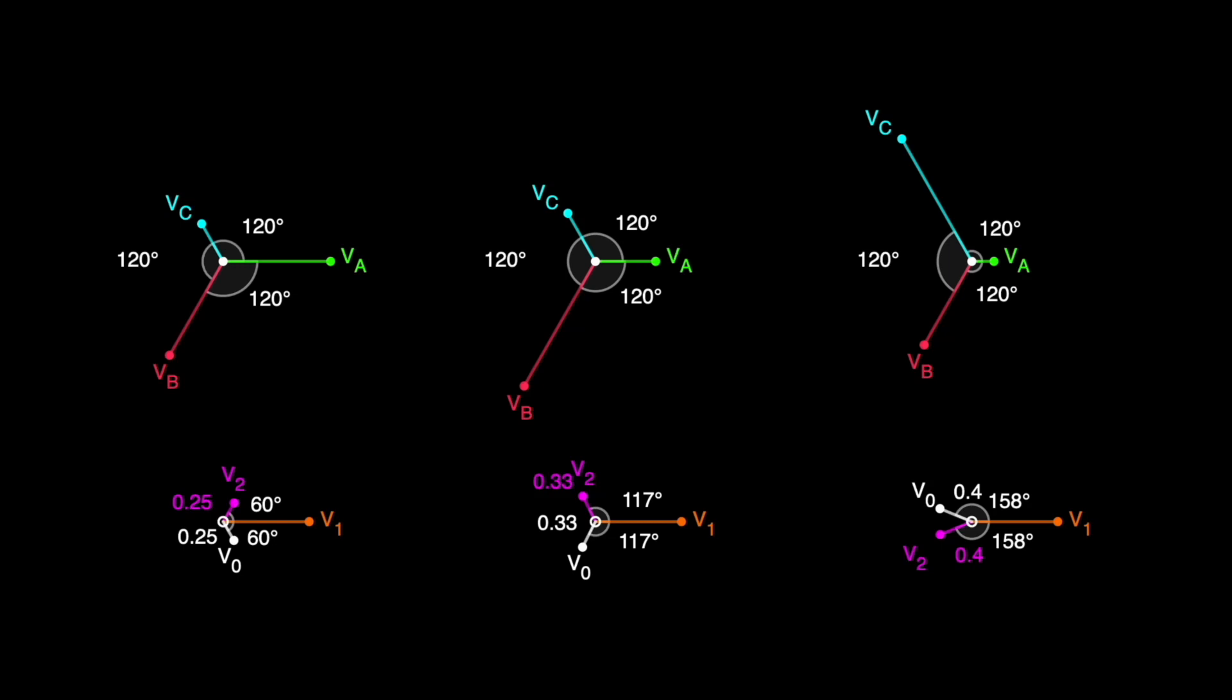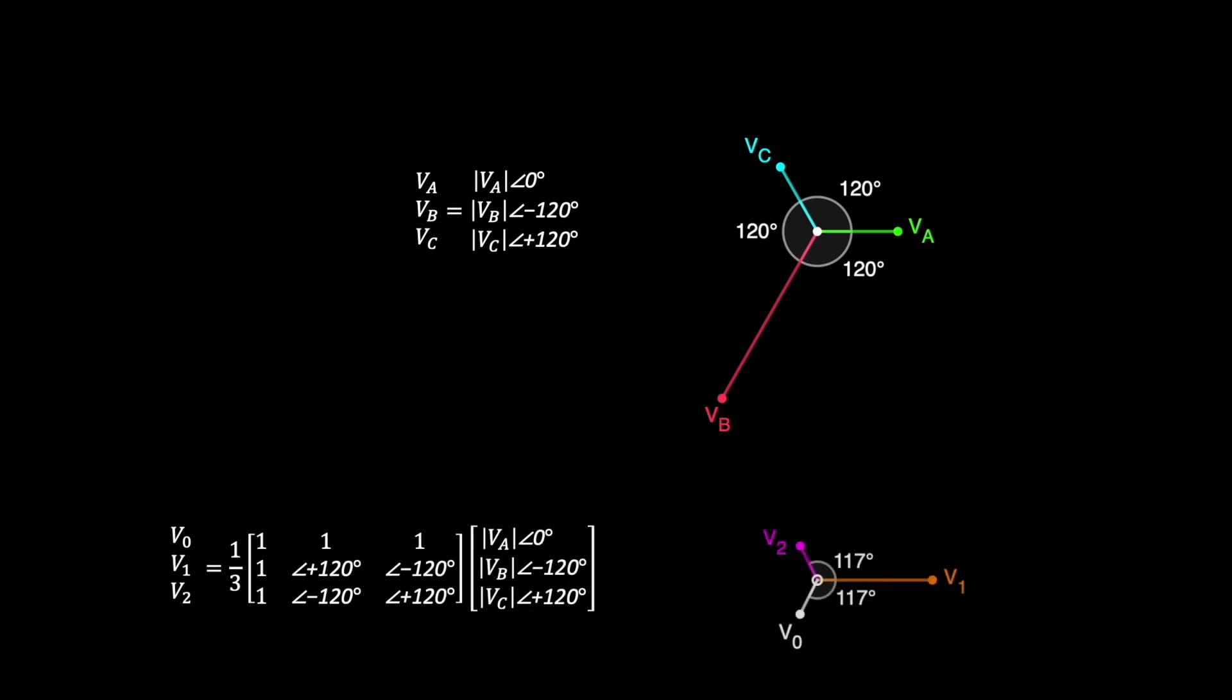Now I'll show you exactly how this is happening. Consider the system shown here, where the ABC phasors are separated by 120 degrees. On the bottom now are the associated symmetrical component phasors and transformation matrix. Multiplying the ABC phasors into the matrix gives the results shown.